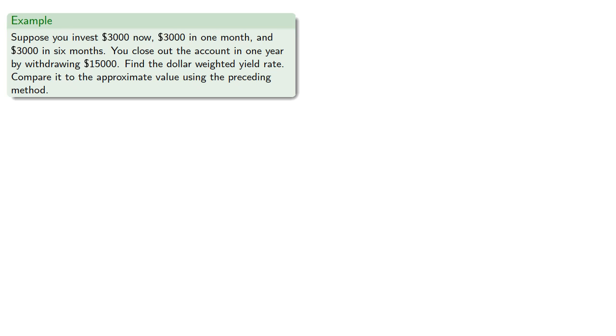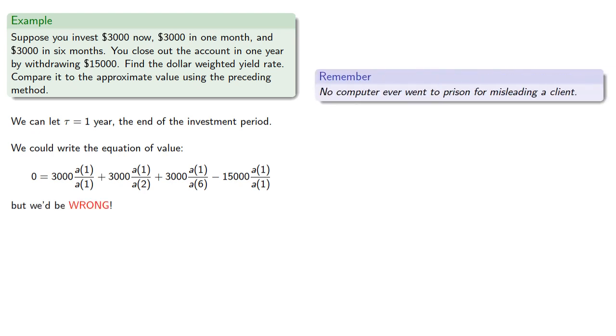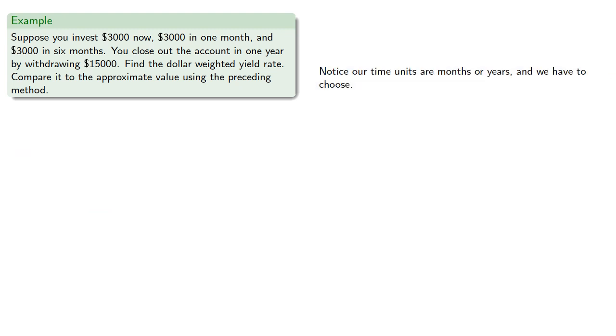So we can let tau equal one year, the investment period, and we could write the equation of value... But we'd be wrong! And remember, no computer ever went to prison for misleading a client. Notice that our time units are months or years, and we have to choose. Since we're probably going to quote an annual interest rate, we should use time in years.